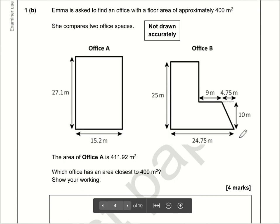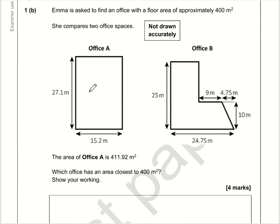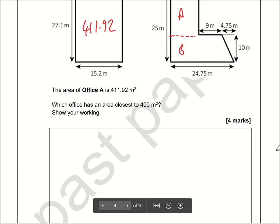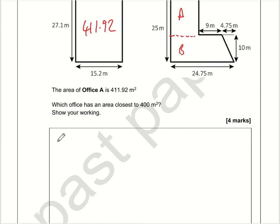Moving on to part B. We've been told that the area of office A is 411.92, so we don't need to do anything there. The problem is working out the area of B. What I'm going to do is turn this shape into two rectangles, work out their combined area, and then take away the area of this triangle. Let's call this rectangle A and rectangle B.